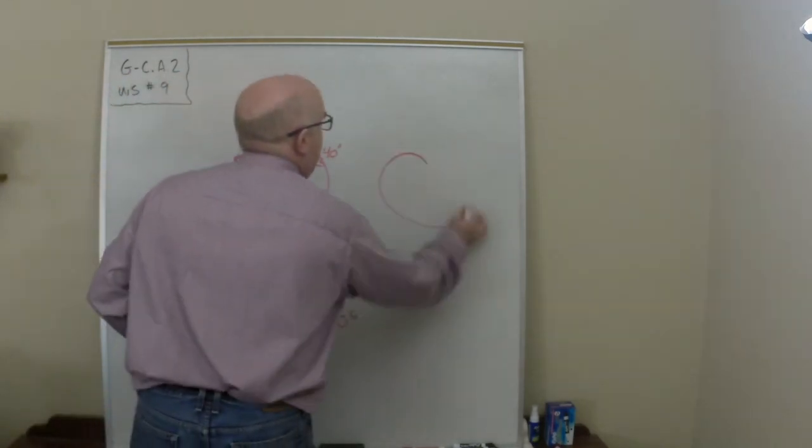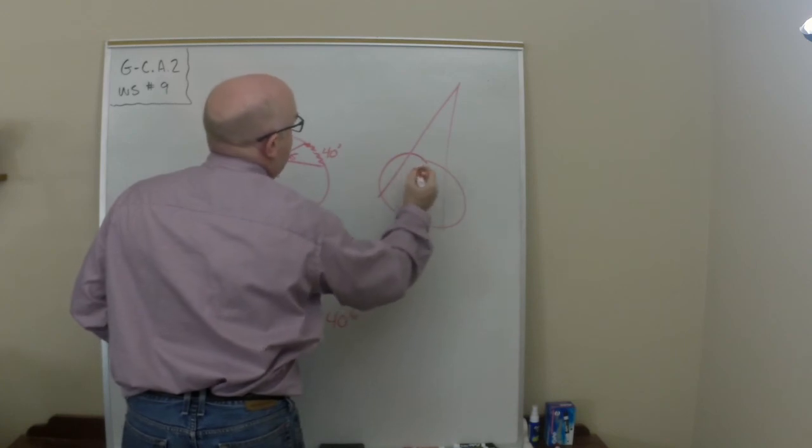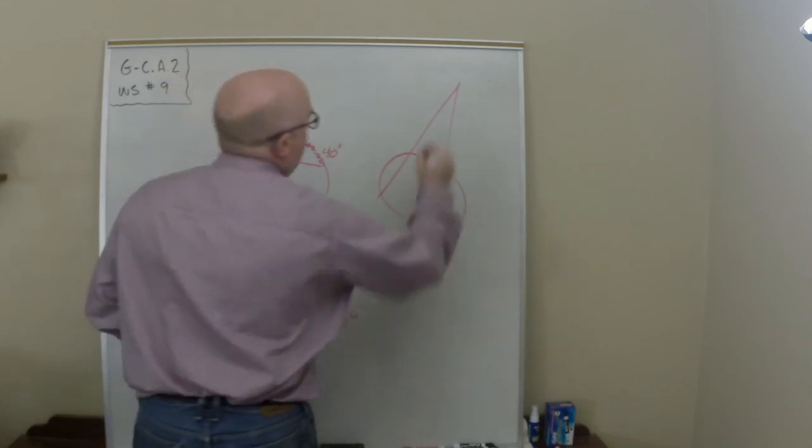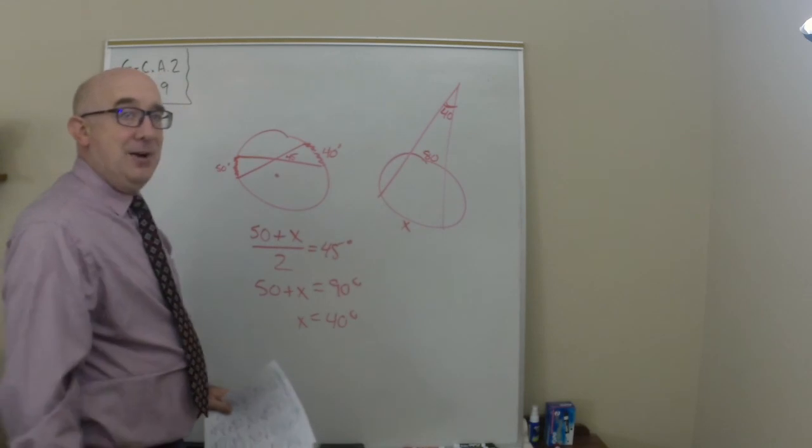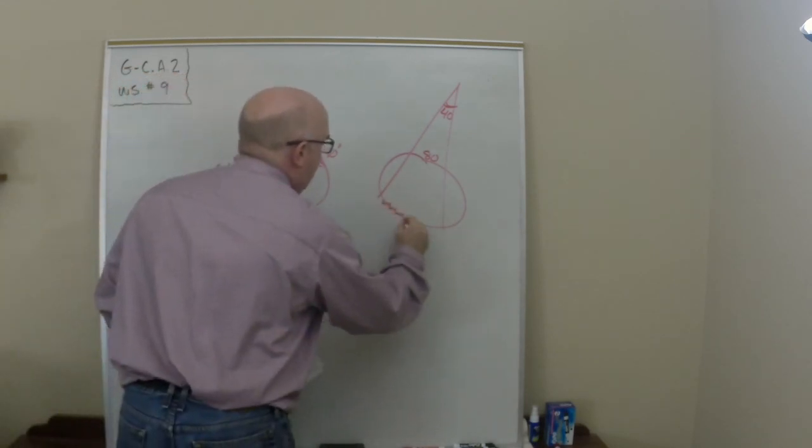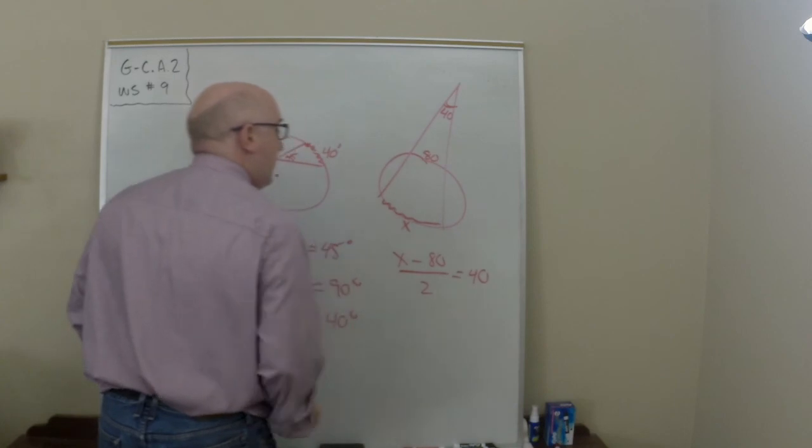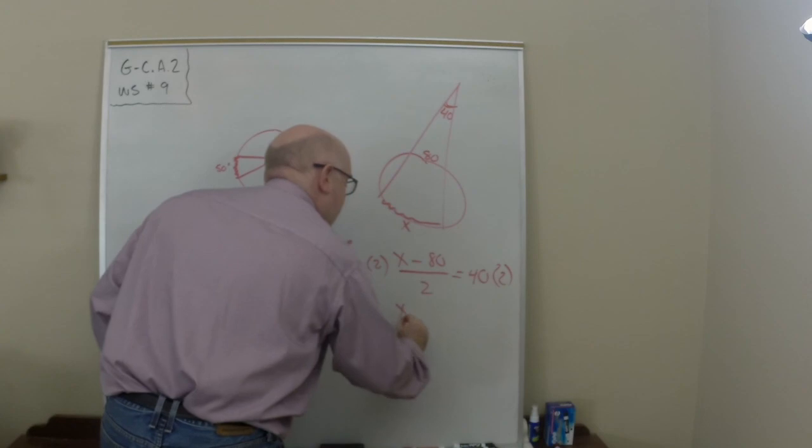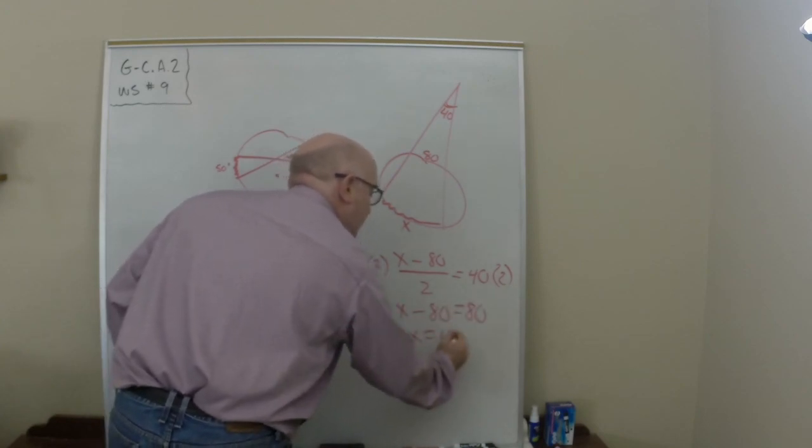That same little situation happens in this kind of diagram. So let's say that we know that this is 80 here, let's say it's 40 out here, and we want to know what the big back arc is. Again I would say the big arc in the back minus the one in the front divided by 2 equals 40. So I multiply both sides by 2, I get x minus 80 equals 80, so x equals 160.